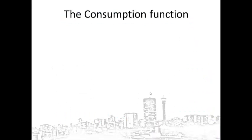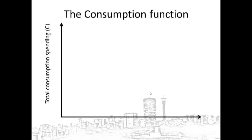Let's use a graph to illustrate the consumption function. On the vertical axis, we write the total consumption spending, and on the horizontal axis, we write total income or production. The first characteristic: if income is zero, if Joan has no job and no income, then consumption will not be zero. Joan will borrow money, or he will use some of his savings, but he will still get money in order to consume vital goods and services. Therefore, the first point on our graph is here — this is Joan's autonomous consumption. Autonomous consumption is that part of your consumption spending that is not influenced by your income; no matter what your level of income, the autonomous consumption stays the same.